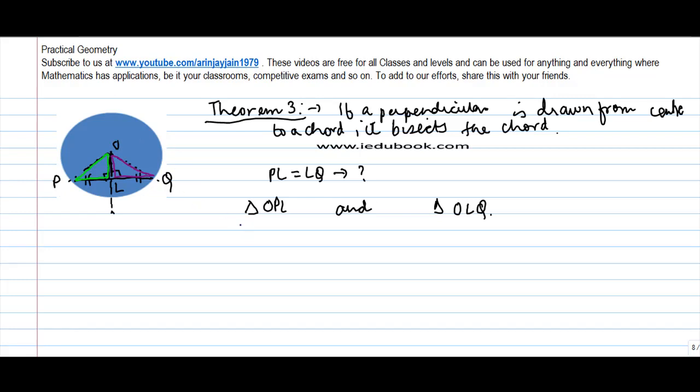Now in these two triangles, we know that OP is equal to OQ is equal to R. Why? Because both are radii. So side.